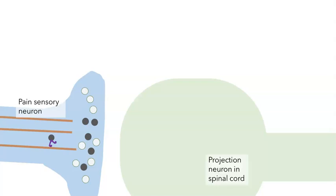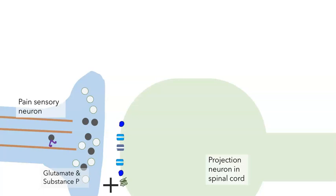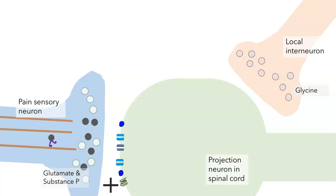If activated, the projection neuron would carry pain information up to the brain. The primary sensory neurons — shown in blue — release both glutamate as well as substance P, so there are co-transmitters with a peptide neurotransmitter and a classic neurotransmitter. The projection neurons in the spinal cord must have receptors for both glutamate and substance P. When this synapse is activated, it tends to excite the projection neuron. But projection neurons also receive input from local interneurons using the neurotransmitter glycine, which when it binds to its receptor inhibits the projection neuron.